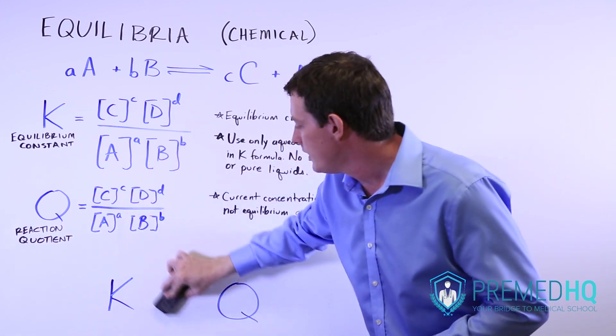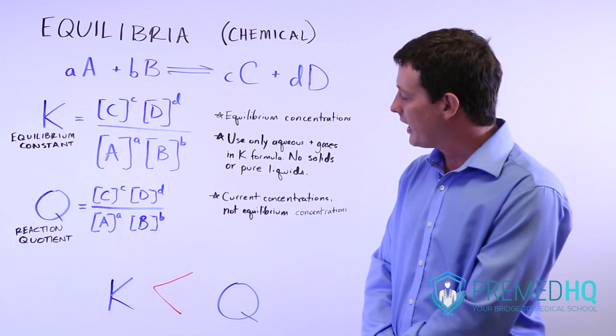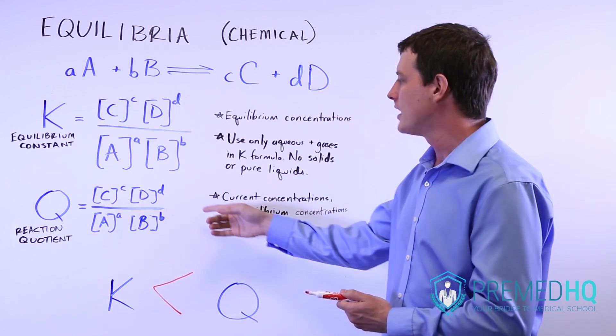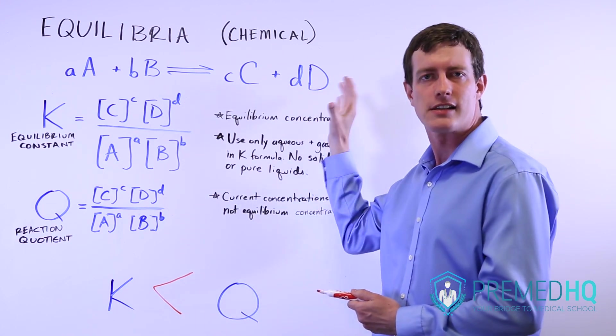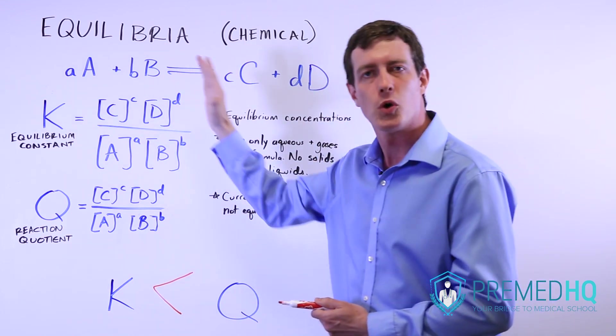Now if K is less than Q, then the opposite holds. And that also makes sense because if Q is greater than K, a lot of times that means you have too many products. These are in excessive quantities, and the reaction will respond to that by moving more toward the left.